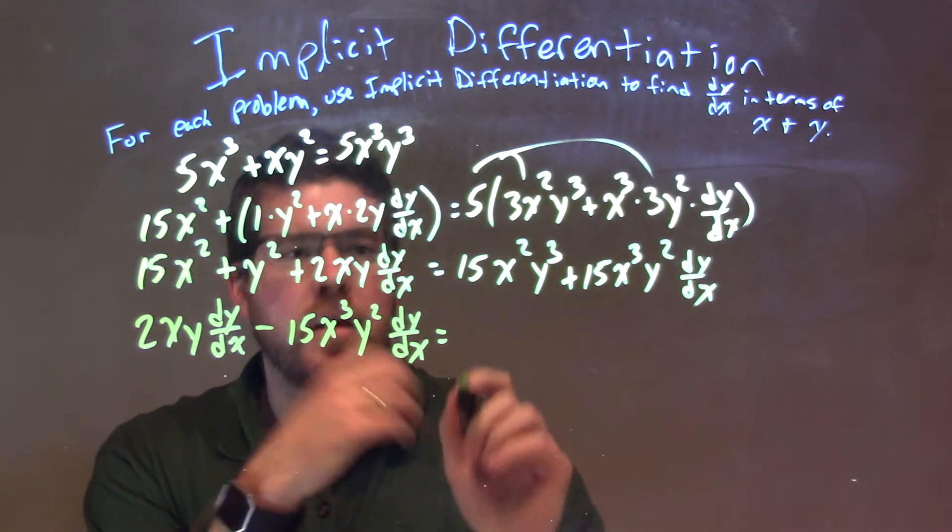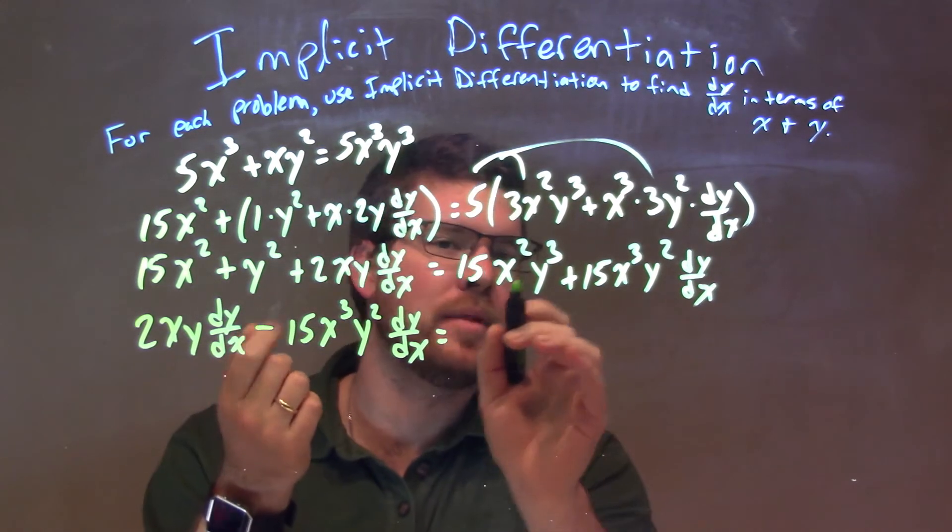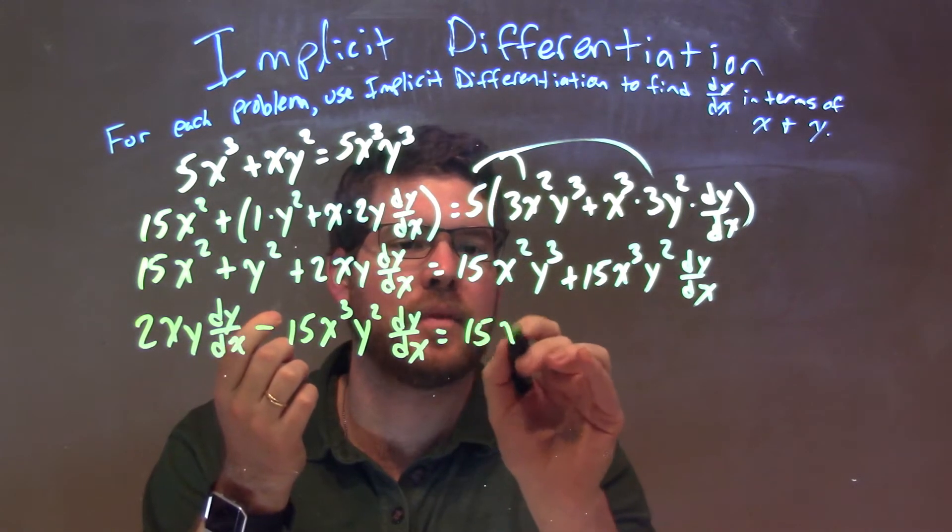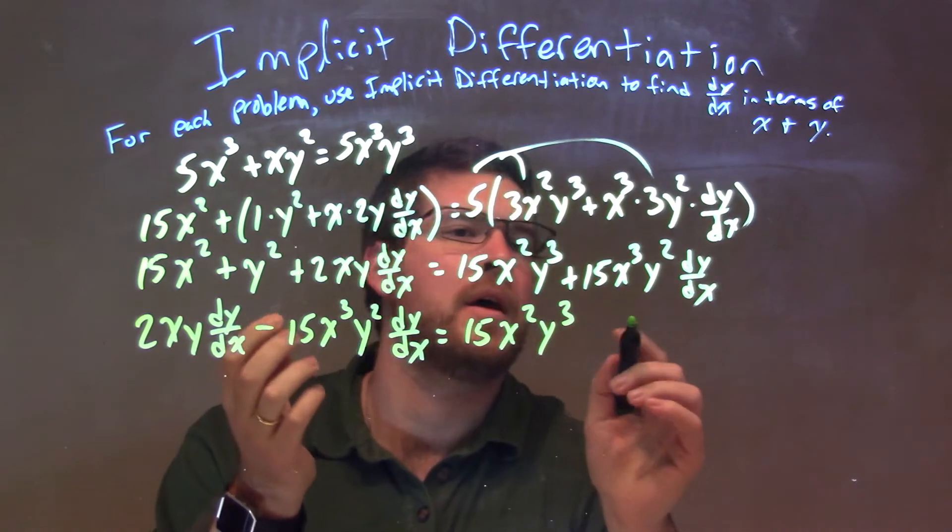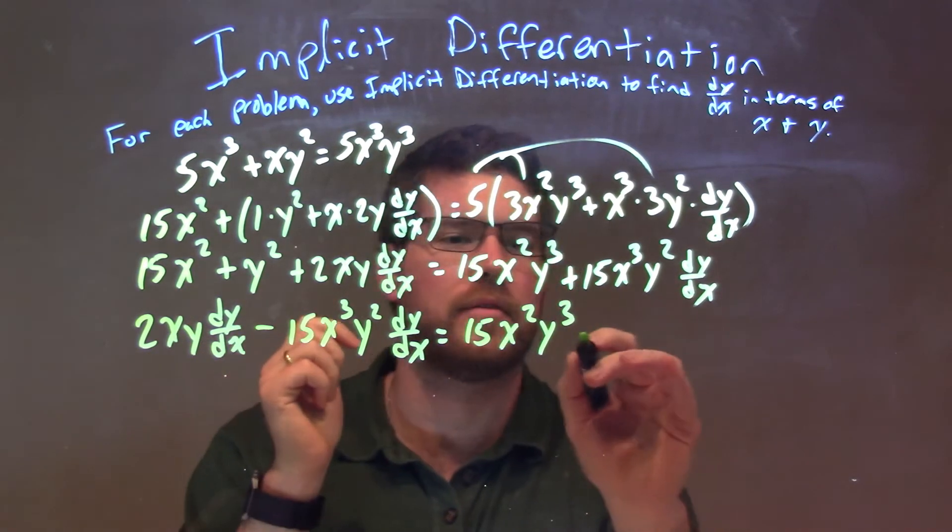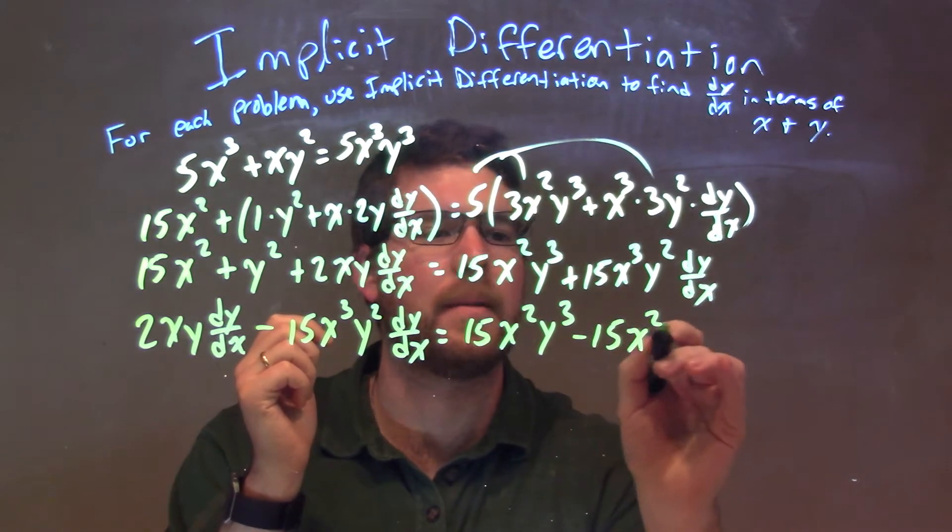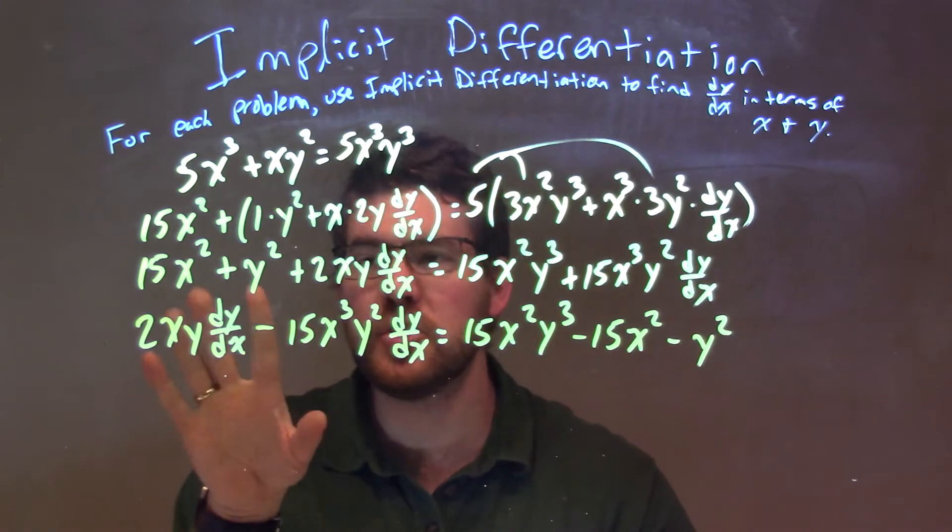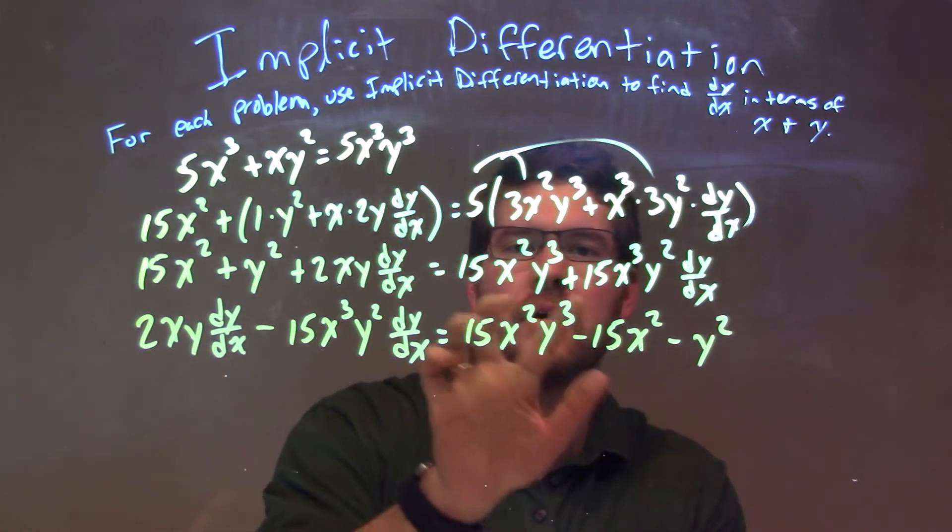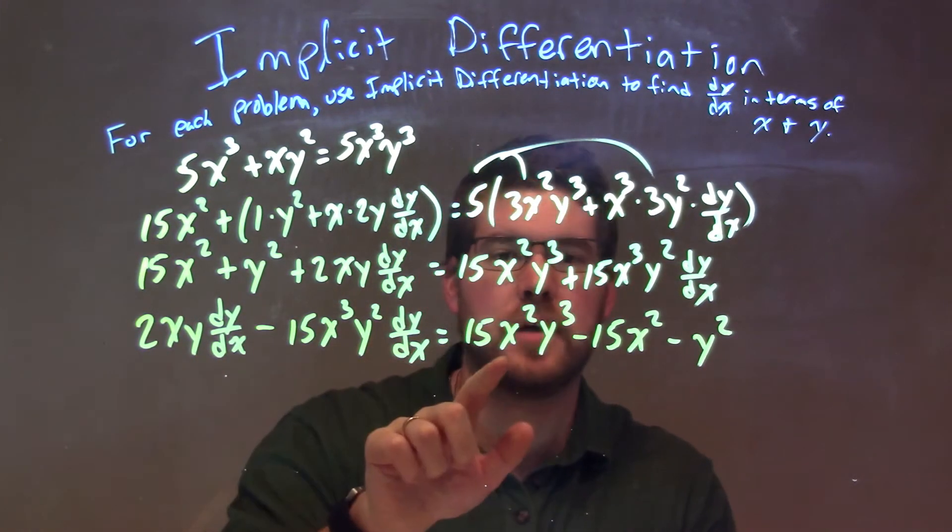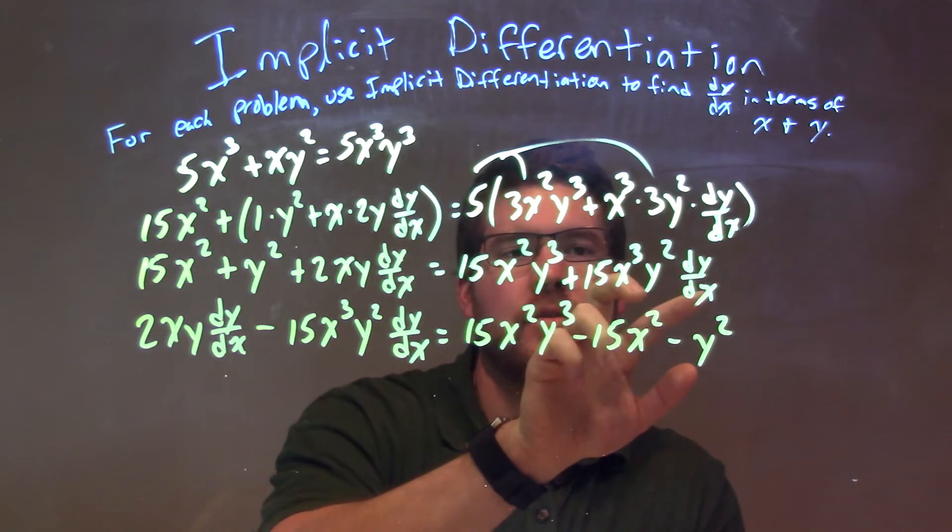All right. Now, on the right-hand side, I'm left with, we have the 15x squared y to the third. Then, I want to subtract these two parts minus 15x squared minus y squared. And I should have everything. These two were over here. This one got put, came down, and it's 15x to the third y squared dy/dx.